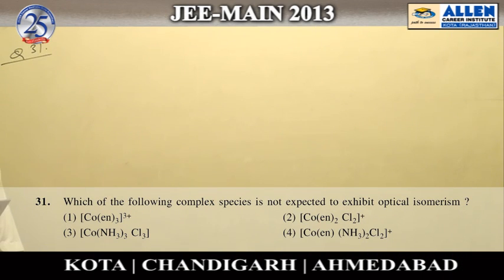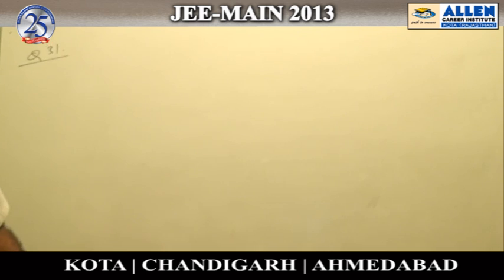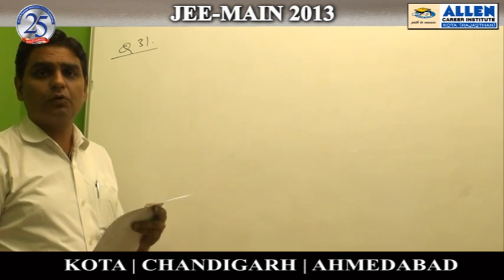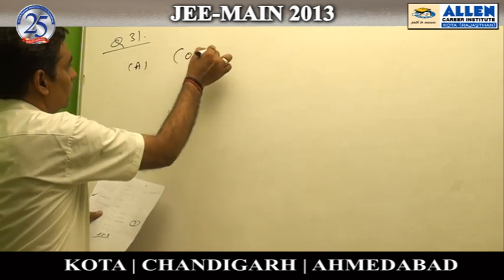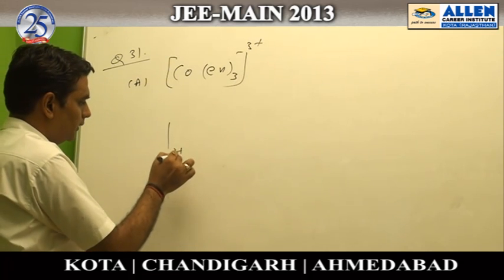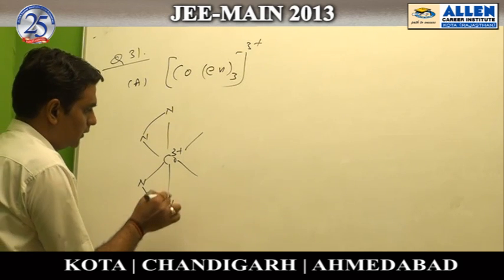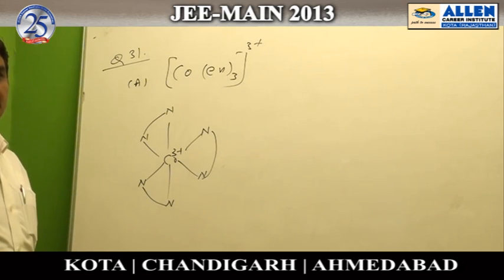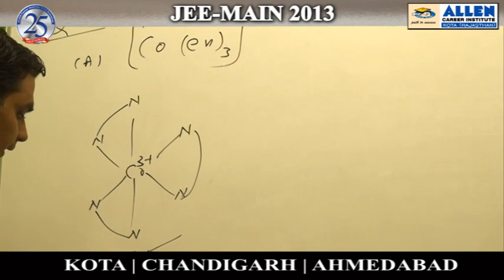Question 31, JEE 2013 Main exam: which of the following complex species is not expected to exhibit optical isomerism? Optical isomerism is possible in complex compounds which do not have a plane of symmetry. Option A, [Co(en)₃]³⁺, is optically active because it has three bidentate ligands in an octahedral geometry, existing in two isomeric forms: D and L.